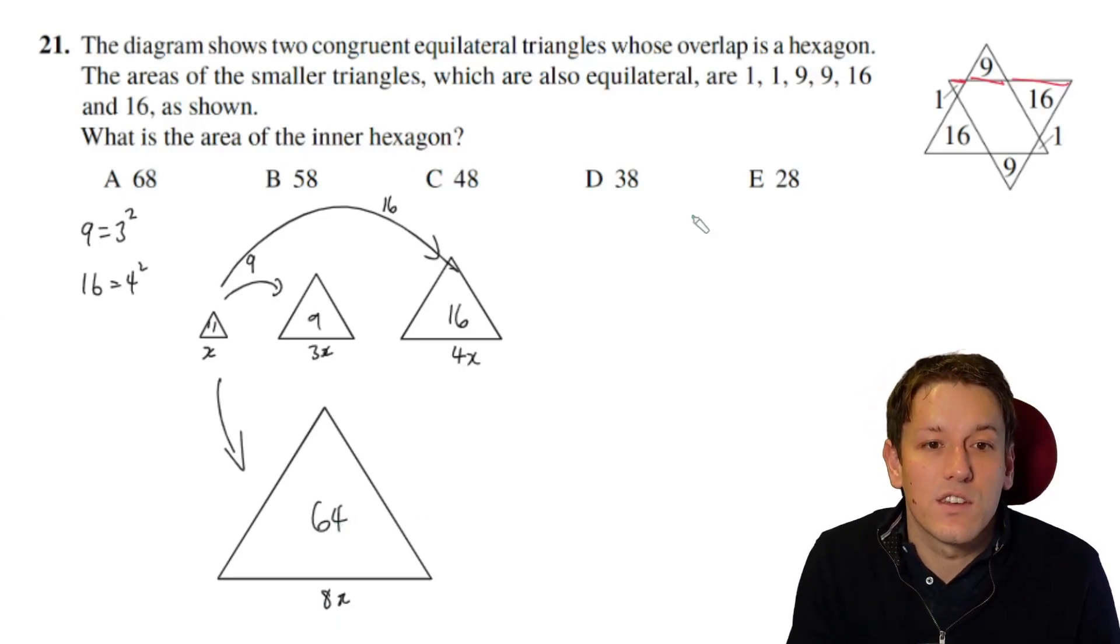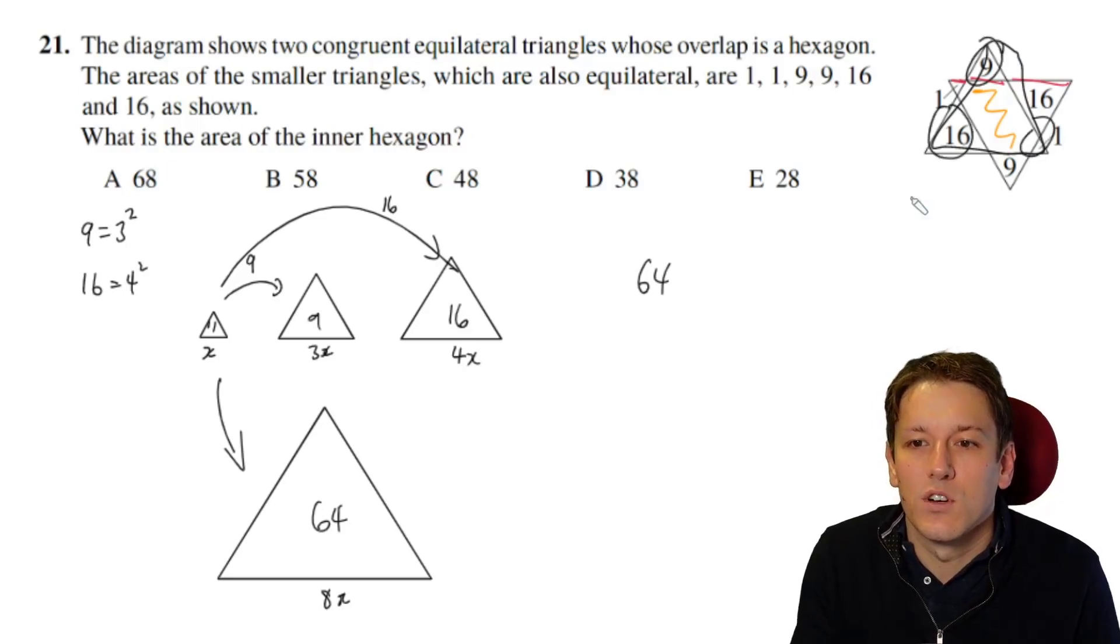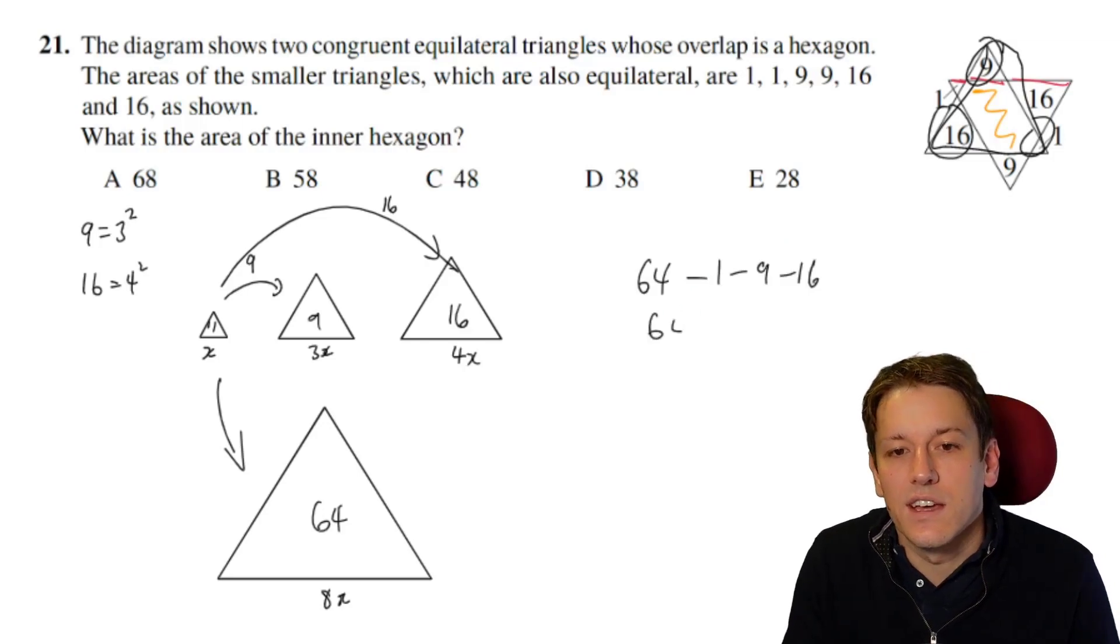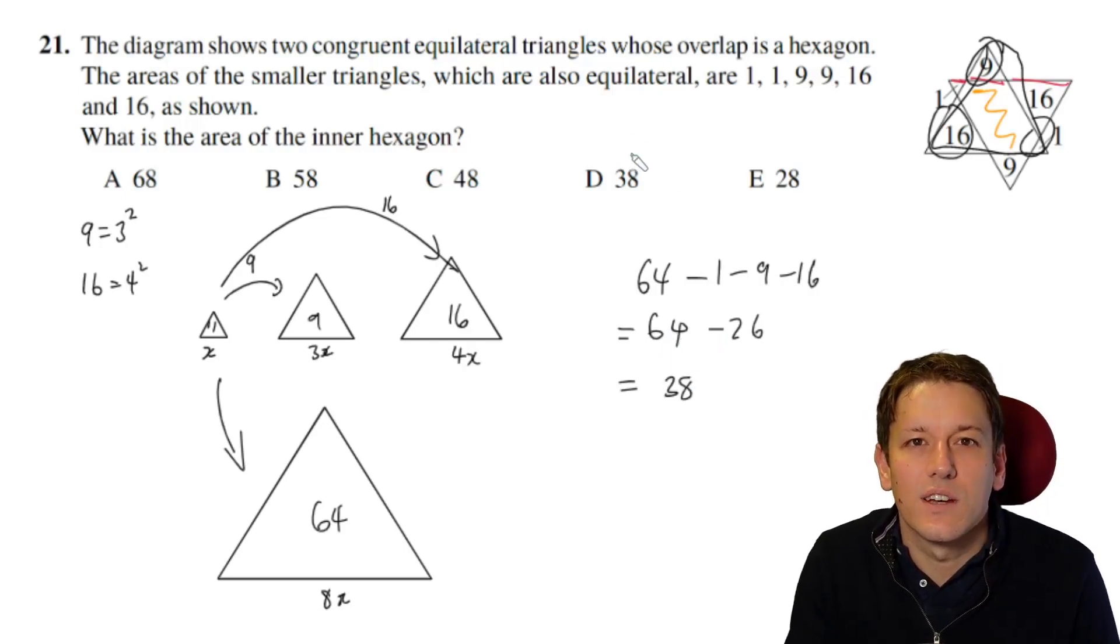Now then, just to get the answer to the question, the inner hexagon is just that large triangle 64, if we just focus on this one, minus each of those smaller ones. So we're going to subtract 1, 9, and 16. So that's 64 minus 26 in total. So that gets us to 38. And so the answer must be D.